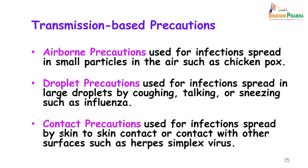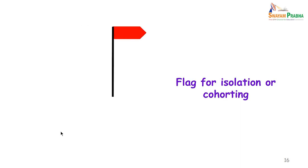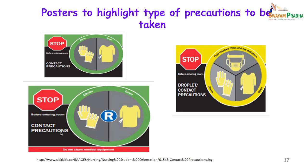Transmission-based precautions include: airborne precautions to interrupt infection spread by small particles such as chicken pox; droplet precautions to prevent spread of large droplets by coughing, talking, or sneezing such as influenza; and contact precautions to prevent skin-to-skin spread. Flagging for isolation or cohorting can also be done, especially when there is no isolation room, and posters can be put up to highlight the type of precaution required.